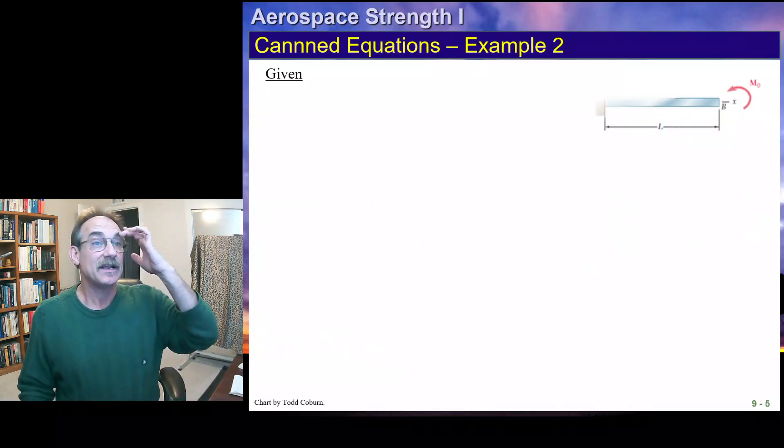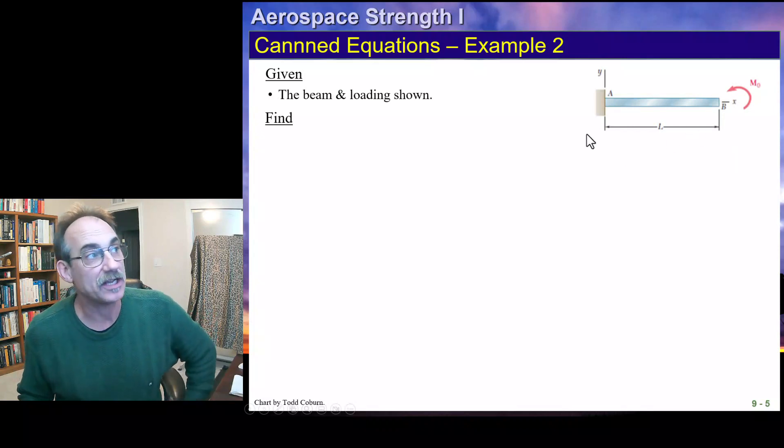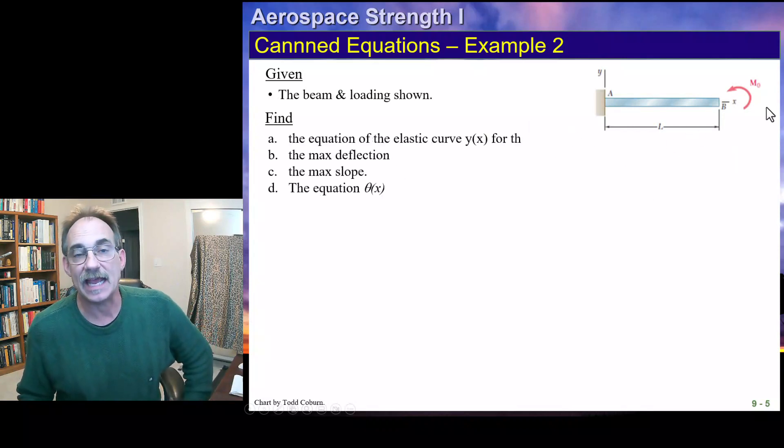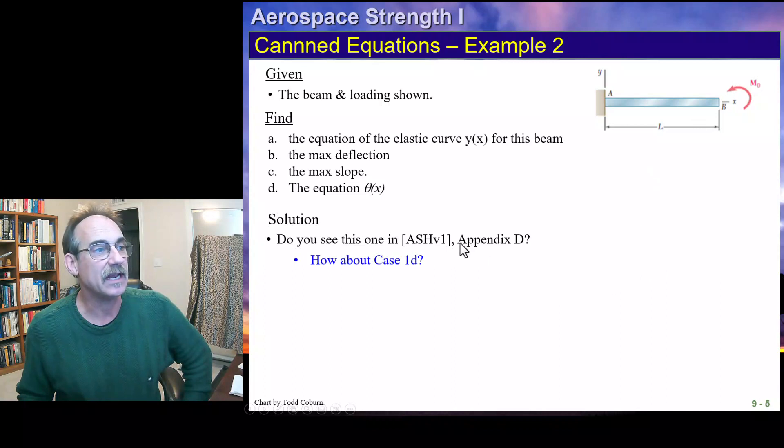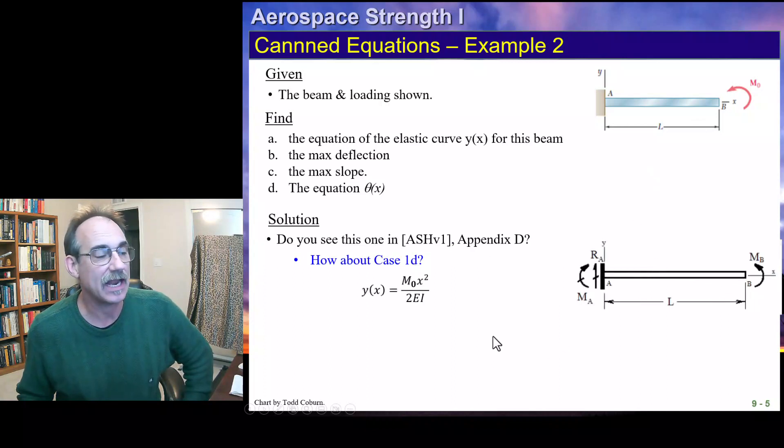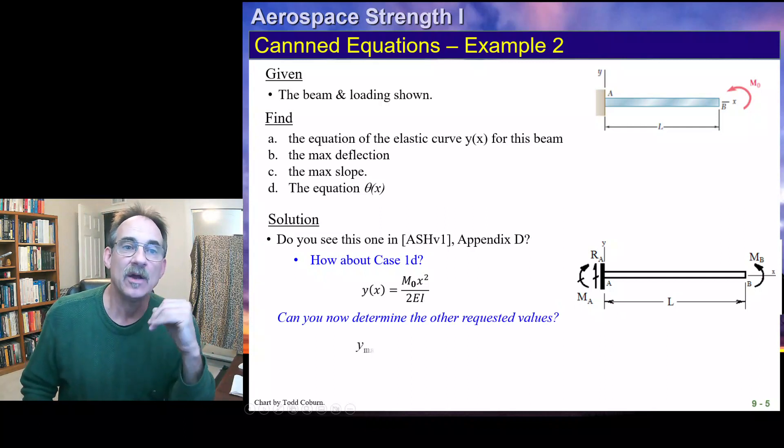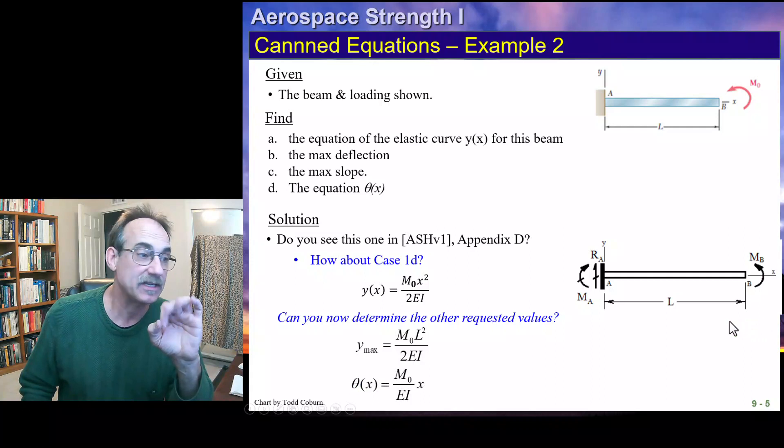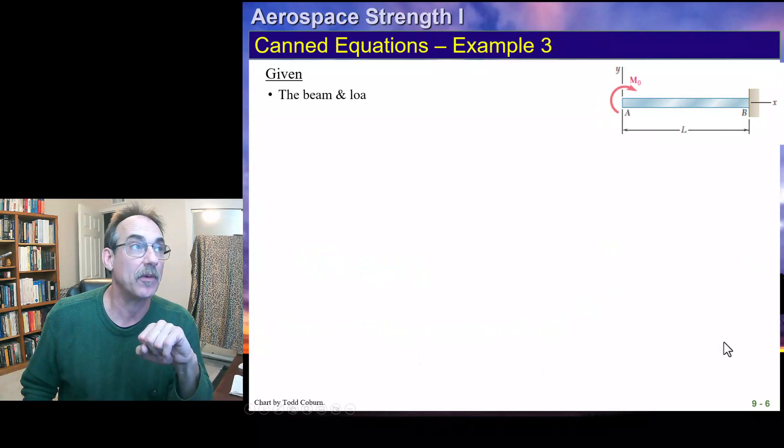If we have another case, this picture is also from Beer and Johnson's text. If we have a cantilever beam with an end load, once again, we see that's just Case 1D. It looks like this in our handbook. That is the deflection equation. And we can go through and now just grab the other max, the theta, whatever is given. And anytime they're not given, we can differentiate for it.